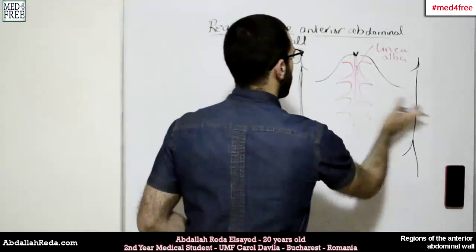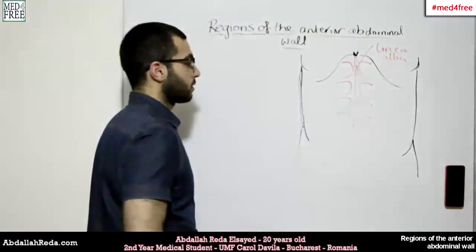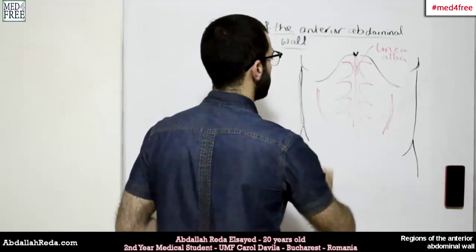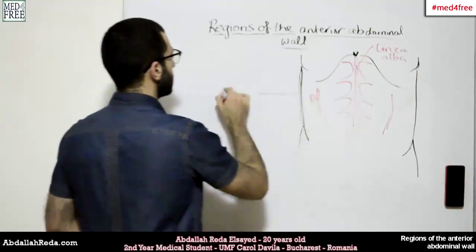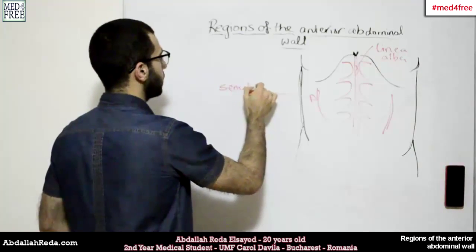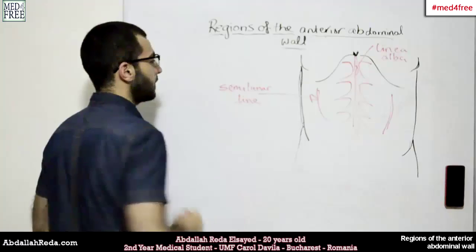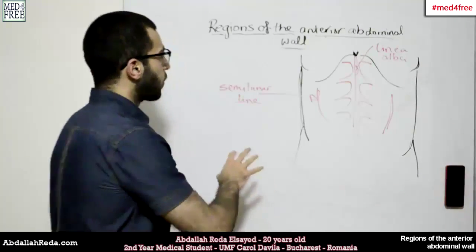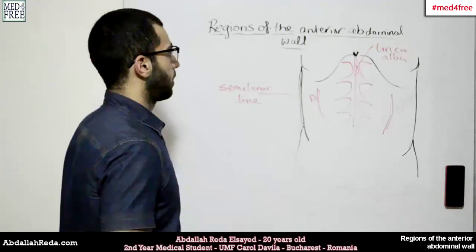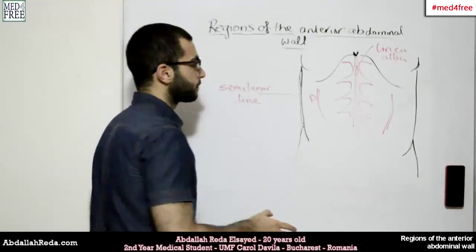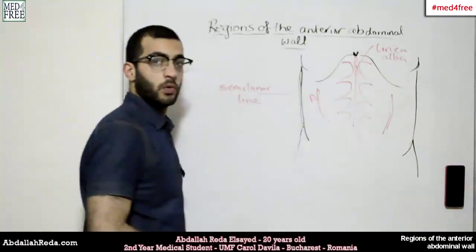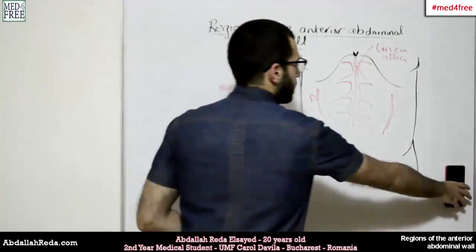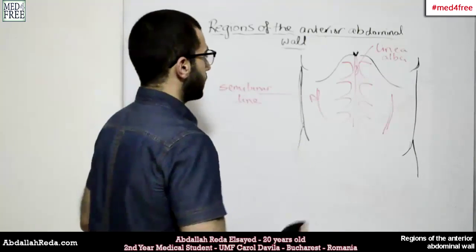On both sides of the muscle we have another line — in each side there is a line called the semi-lunar line. This is the important part of the surface anatomy of the anterior abdominal wall, the rectus abdominis muscle. The linea alba is considered a weak point and can be affected through hernias and so on.